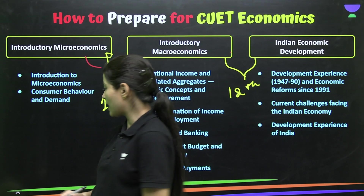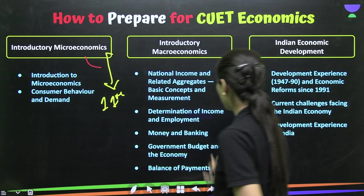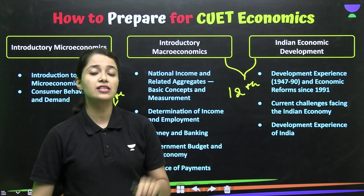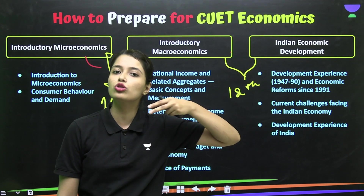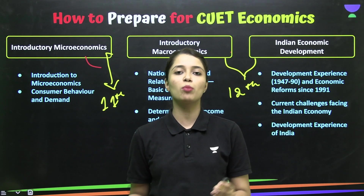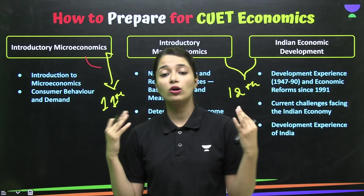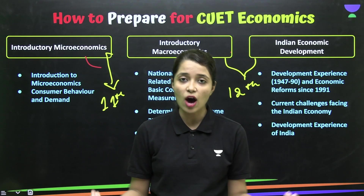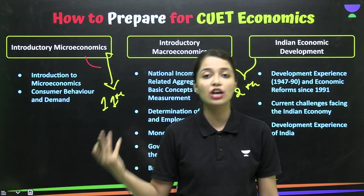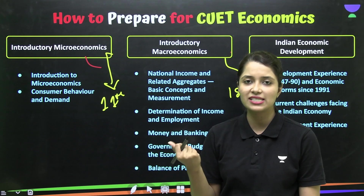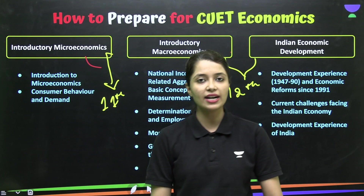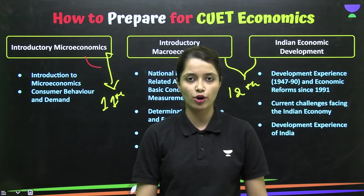First of all, let's look at the syllabus. We have introductory microeconomics. In the starting two chapters: one is the introduction, where we learn about the central problems of the economy — what is economics, what is scarcity, alternative uses, meaning various economic problems. These are basic things from our first chapter. Then, Consumer Behavior and Demand, which is chapter number two of your microeconomics.